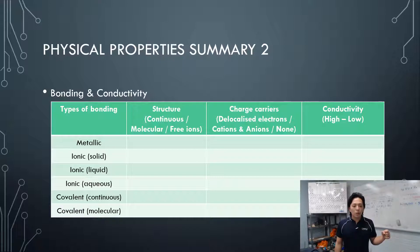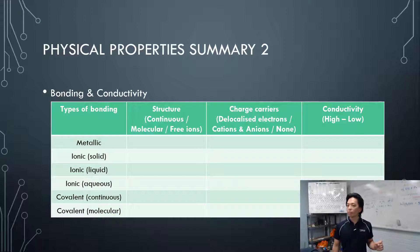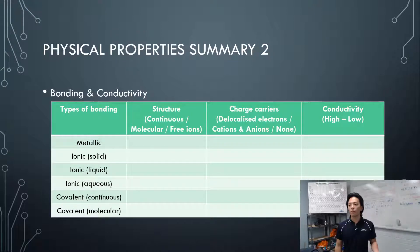Last one: covalent molecular. The structure is molecular — small distinctive terminating shape. Charge carriers? None. Conductivity of molecules — did you see any conductivity from sugar, water, or oxygen gas? No. So conductivity is very, very low. Silicon would be a bit higher, carbon even more, metals more.